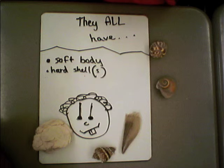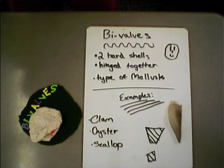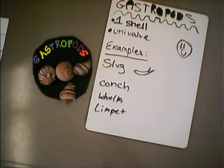Bivalves. Bivalves have two hard shells that are hinged together and are a type of mollusk. Some examples are clams, oysters, and scallops.